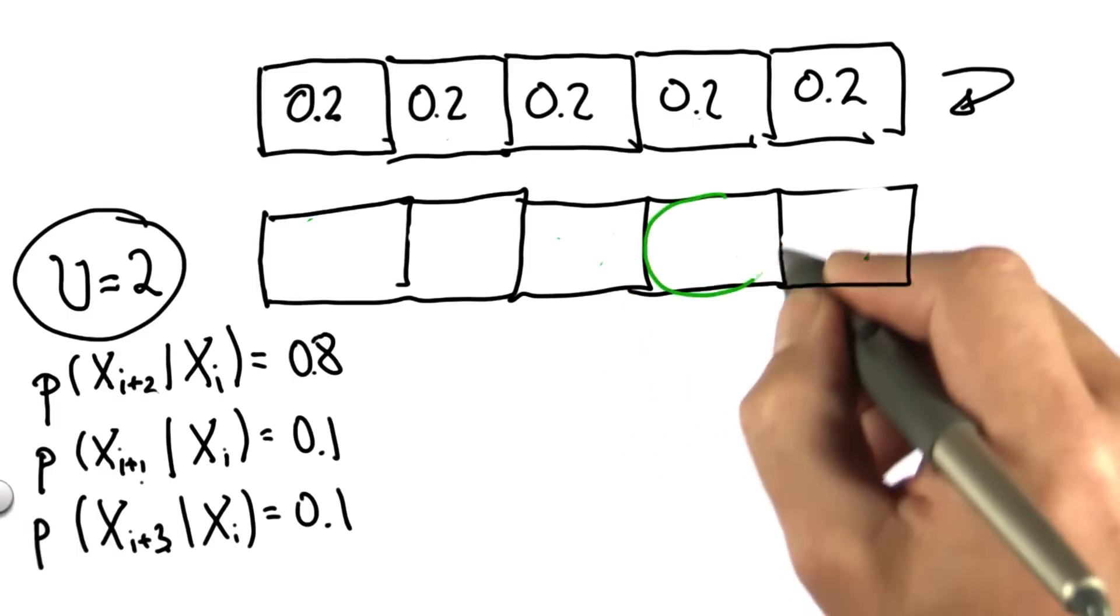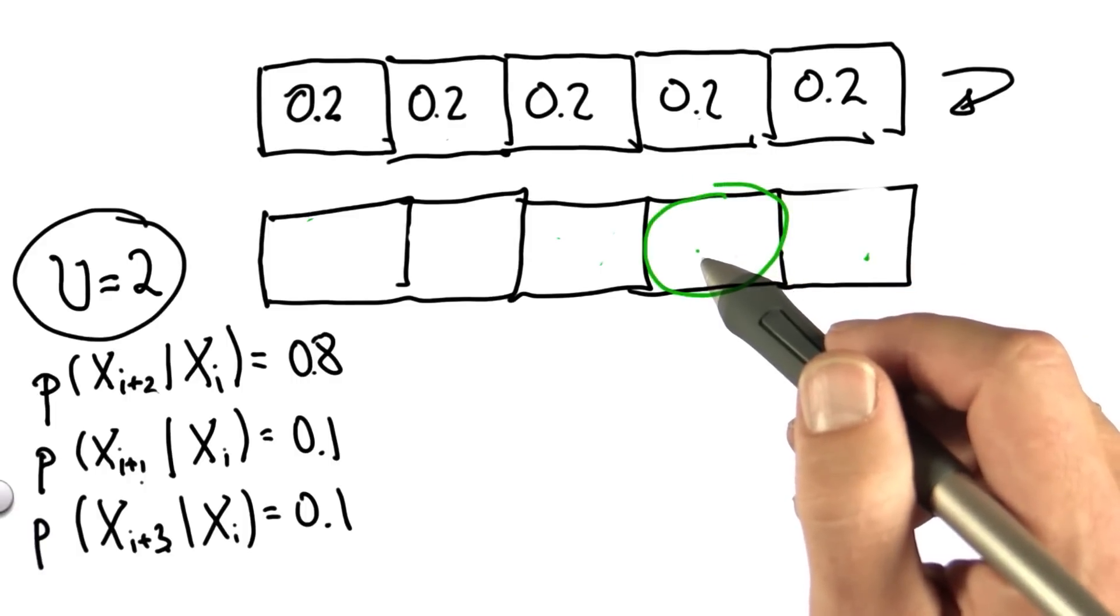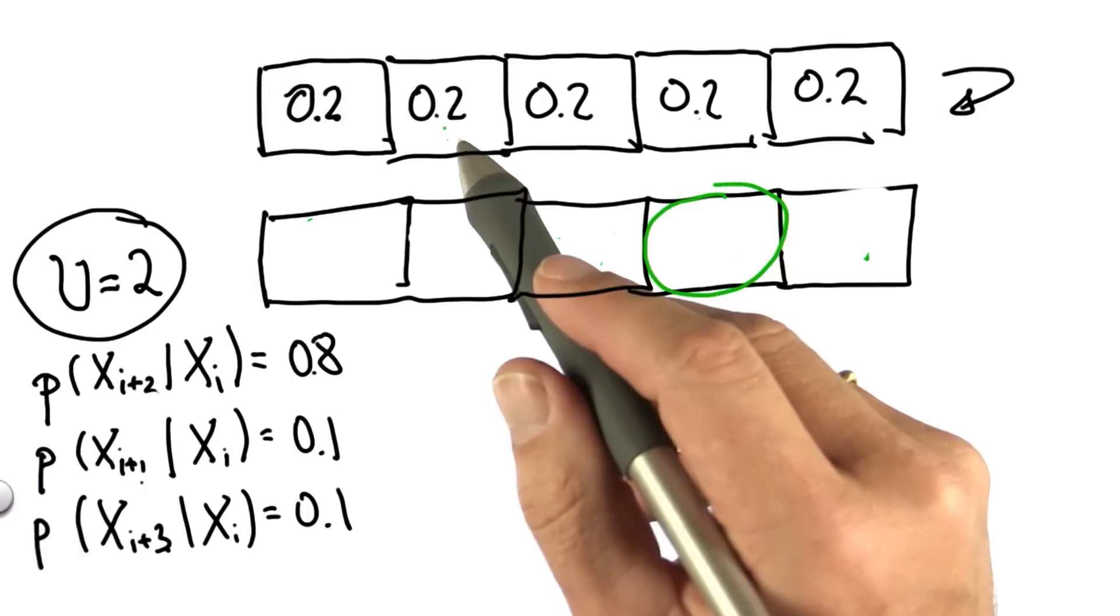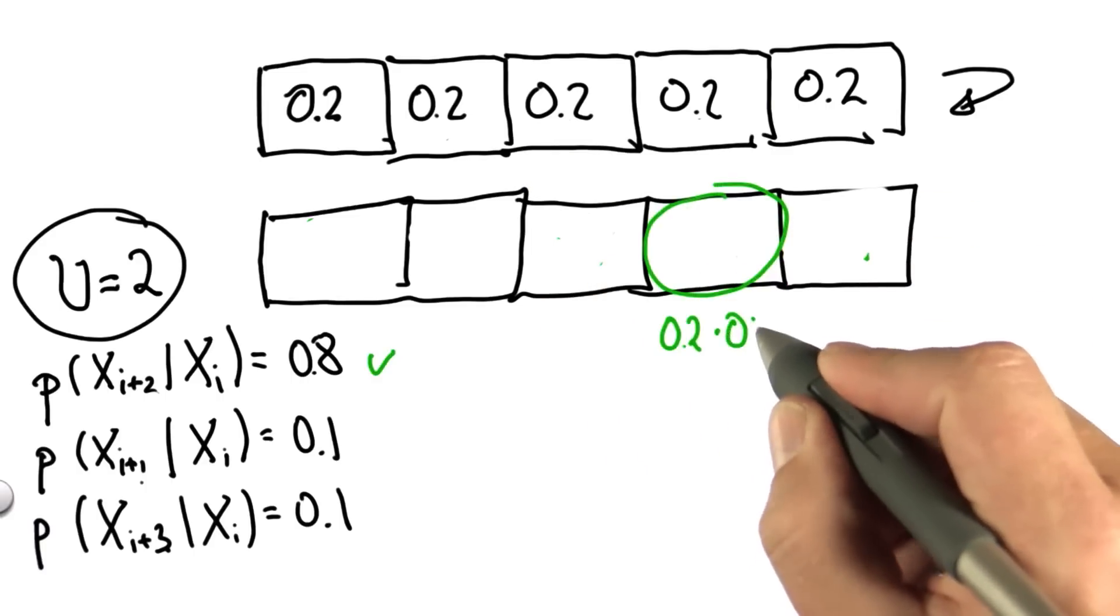So let's pick one of them, say this one over here. We could have arrived here in three different ways. Perhaps we started in x2 and our motion went well. This gives us a 0.2 times a 0.8.